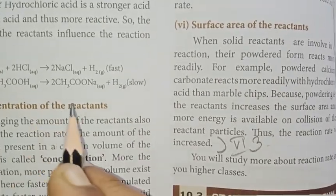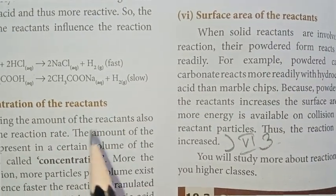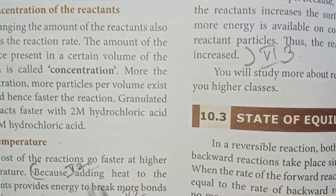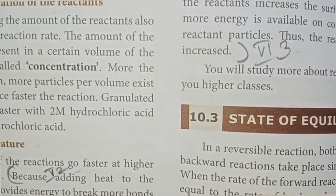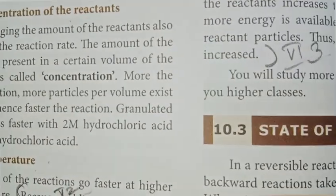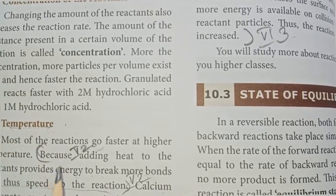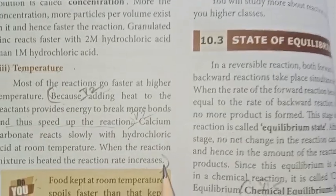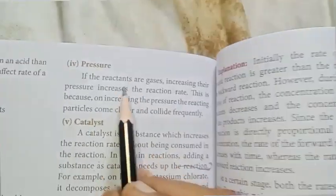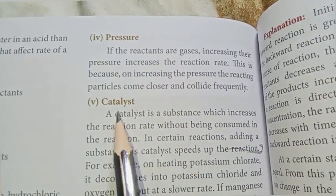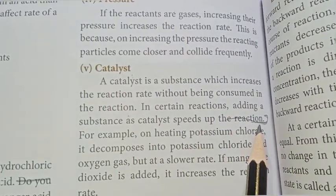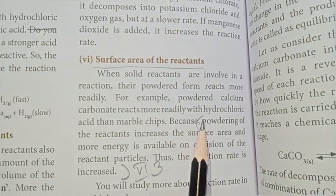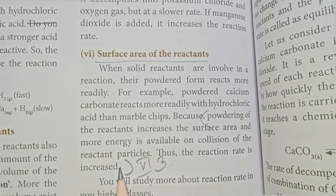The concentration of the reactants, temperature — increase in temperature increases the rate because adding heat to the reactant starts the rate increase. Next: pressure and then catalyst. The surface area of the reactant — powdering increases the surface area, which increases the rate.